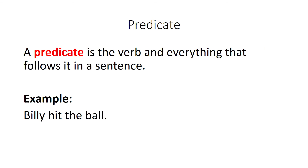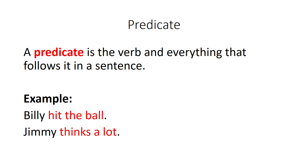A predicate is the verb and everything that follows it in a sentence. So in 'Billy hit the ball,' Billy was the subject and 'hit the ball' is the predicate. Same thing with 'Jimmy thinks a lot' — Jimmy is the subject, but 'thinks a lot' is the predicate.